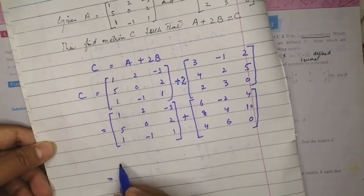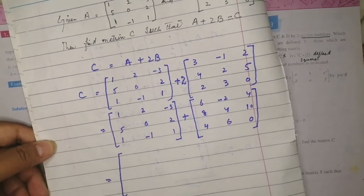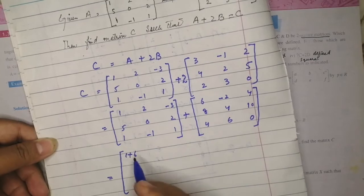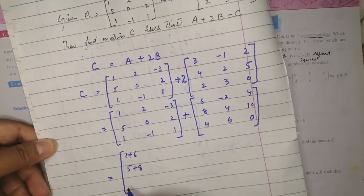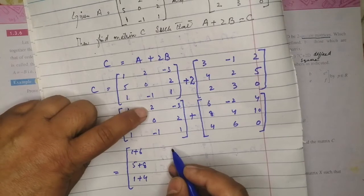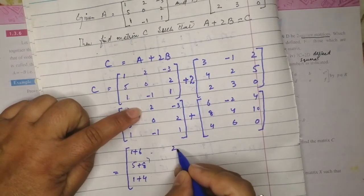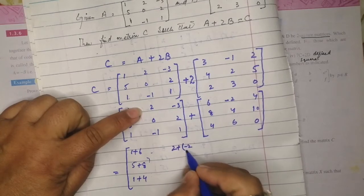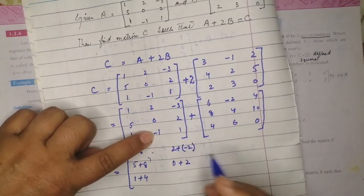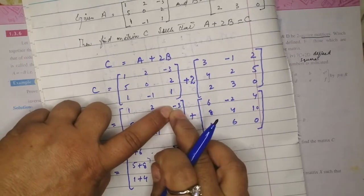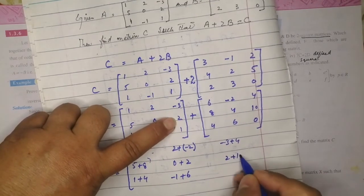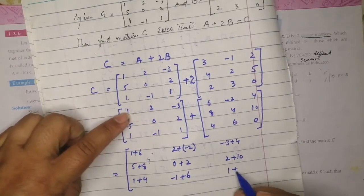Since there is a plus sign in the middle, we add each corresponding element. 1 plus 6, 5 plus 8, 1 plus 4; then 2 plus (-2) — we put brackets when two signs appear together — 0 plus 4, -1 plus 6; then -3 plus 4, 2 plus 10, 1 plus 0.